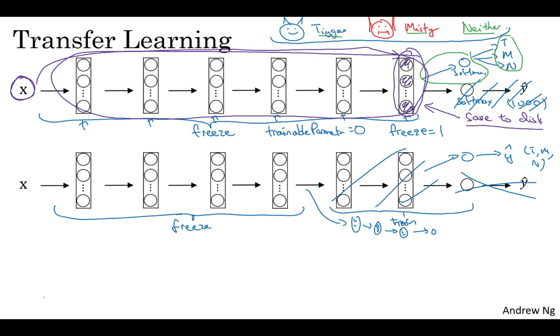And the idea is that if you have a bigger dataset, then maybe you have enough data not just to train a single softmax unit but to train some modest size neural network that comprises the last few layers of this final network that you end up using.